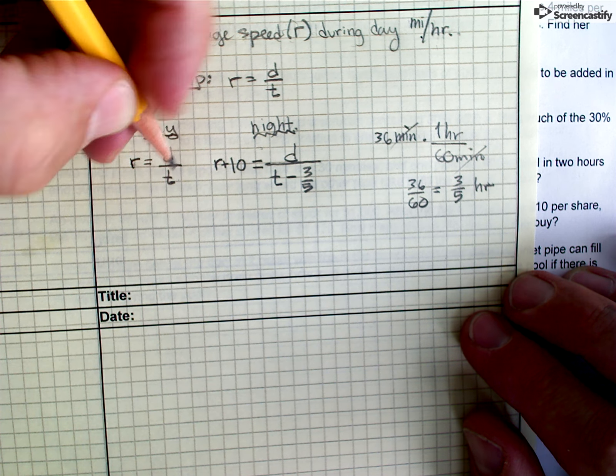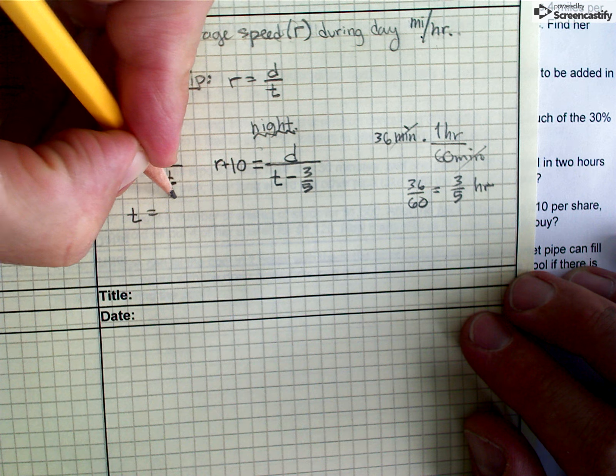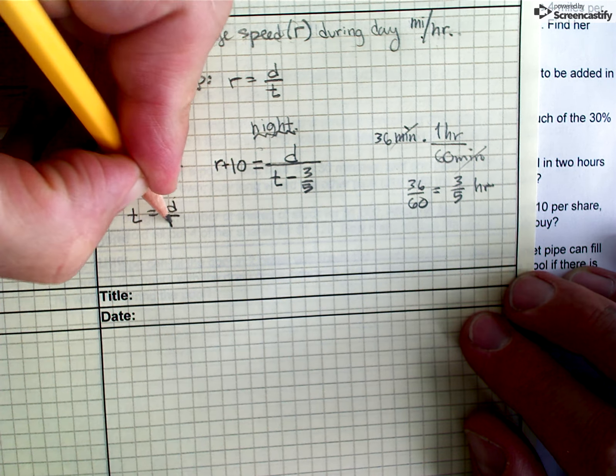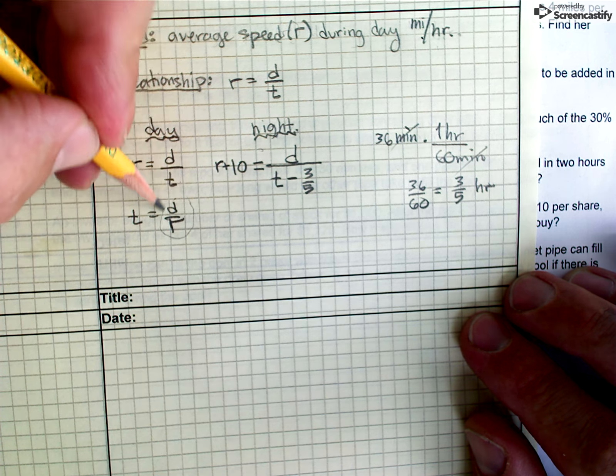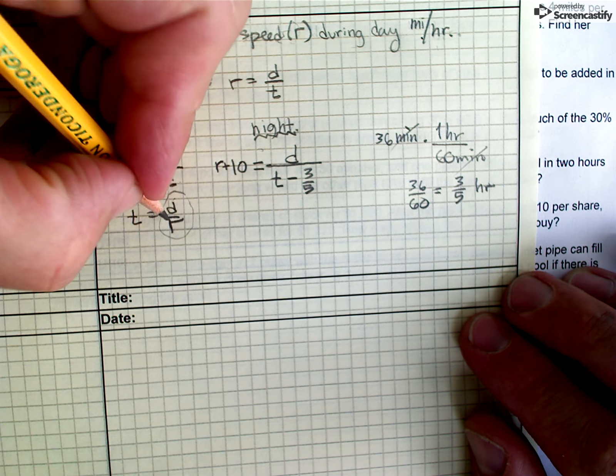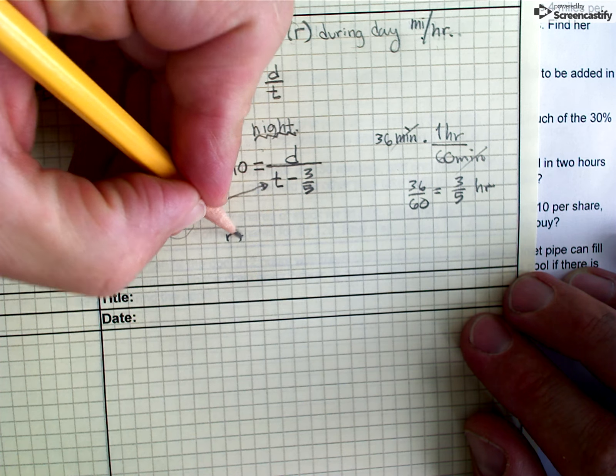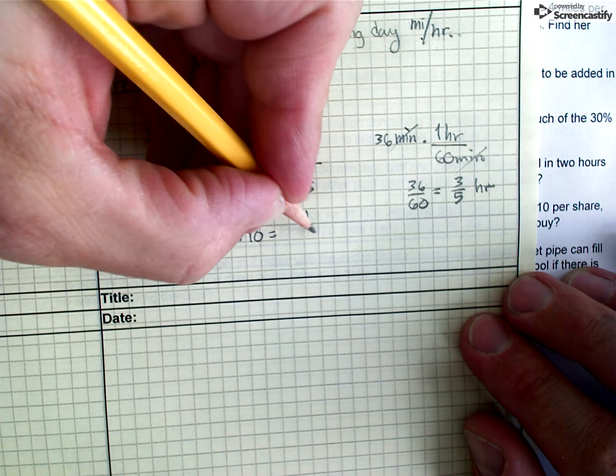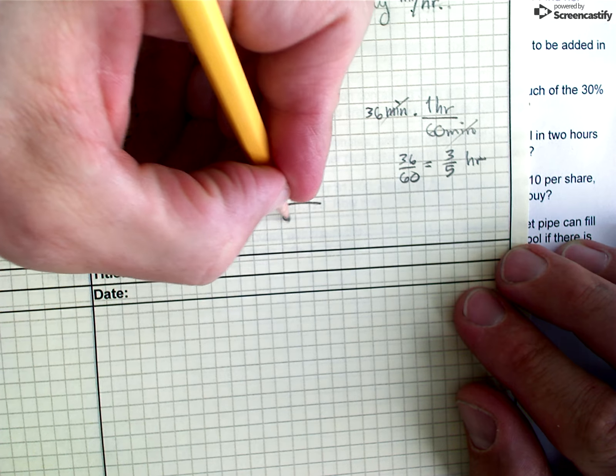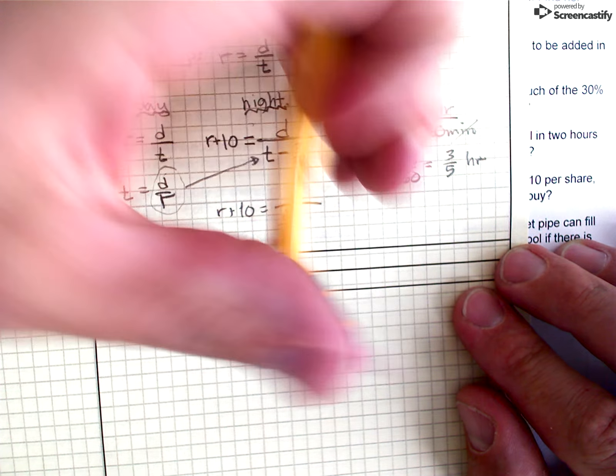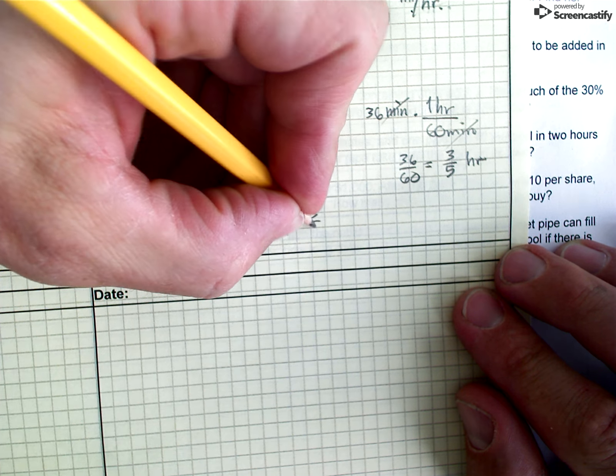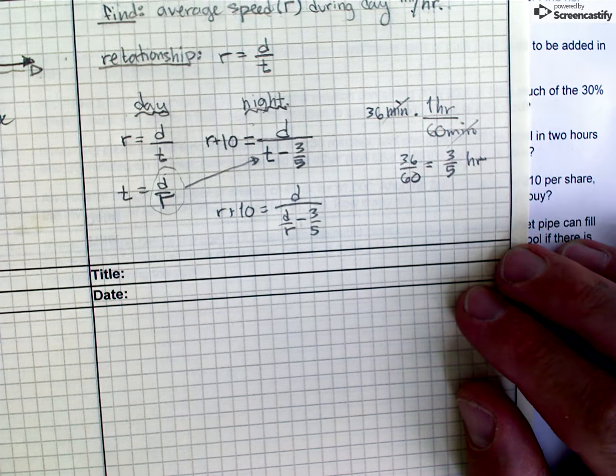So instead, let me take this equation from the daytime and just solve it for T. And then I can take the result, D divided by R, and plug it in right there for that T. So I get R plus 10 equals D divided by D over R, D over R minus 3 fifths.